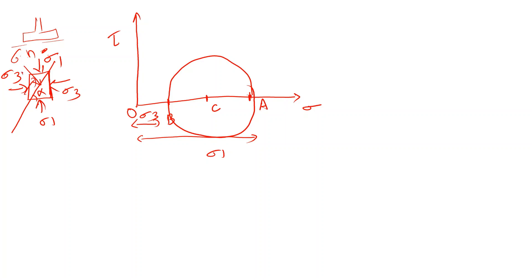On that plane we have normal stress and shear stress. This angle from the center is the central angle, and this central angle is 2 times alpha. If you look at the two coordinates, you measure the parametric system — that gives the toe value. This point represents the variable sigma, which is the normal stress. The shear stress and the normal stress are on that plane.